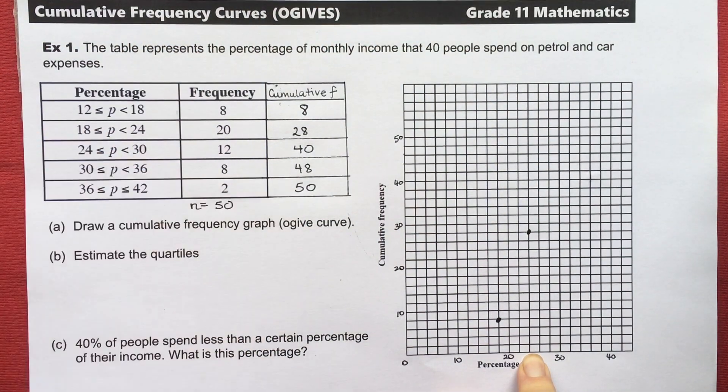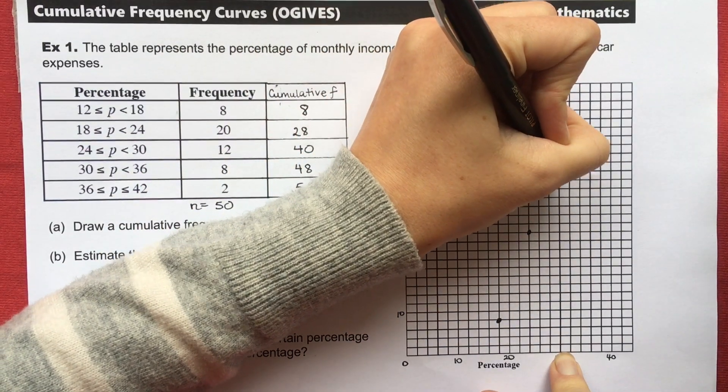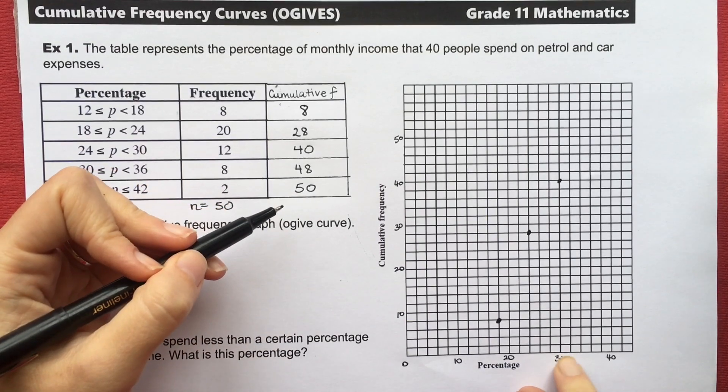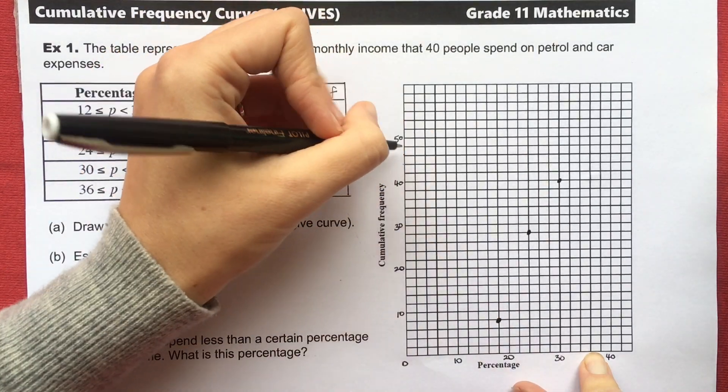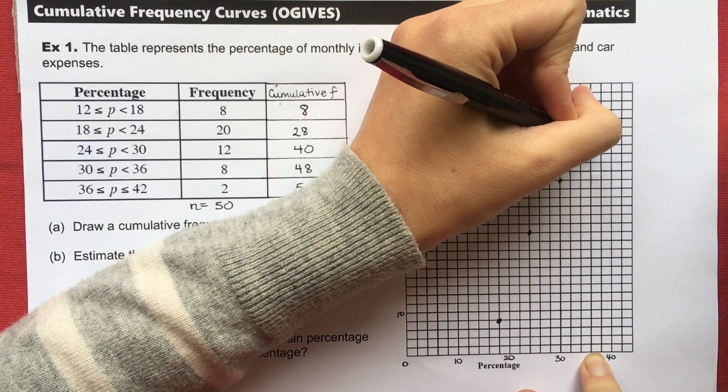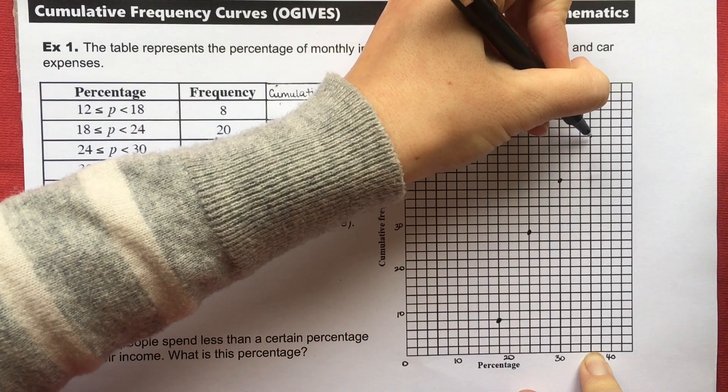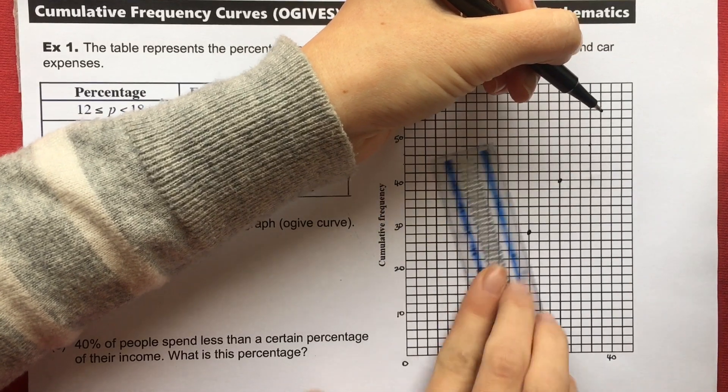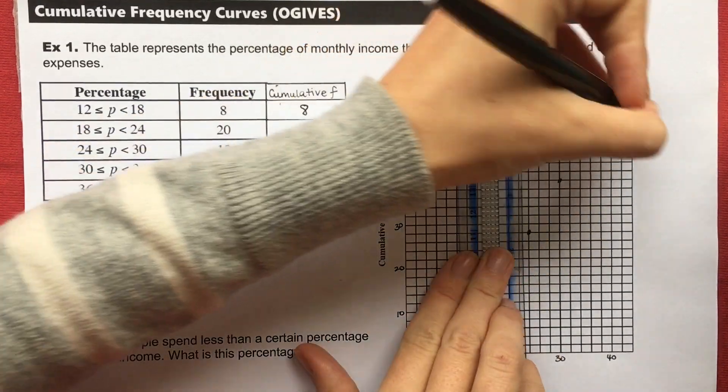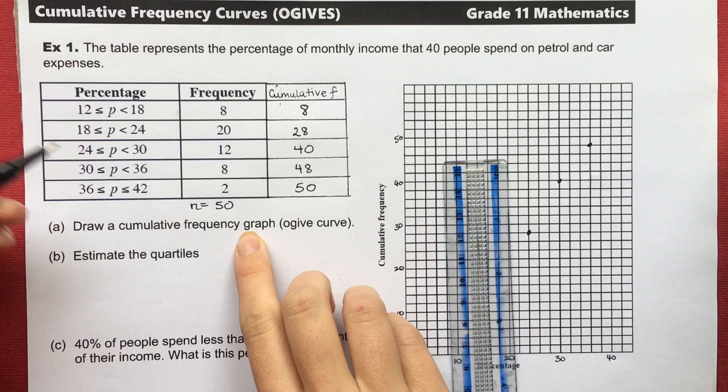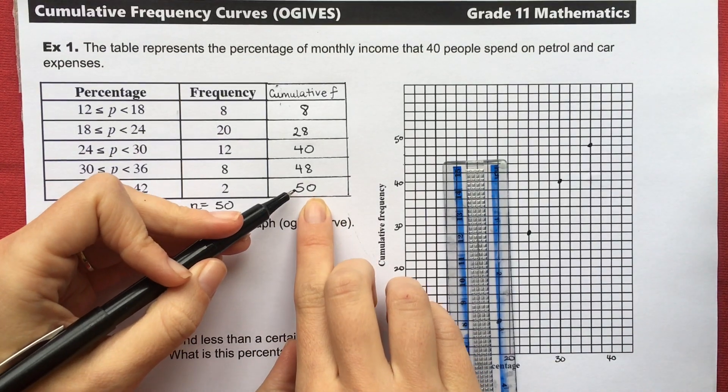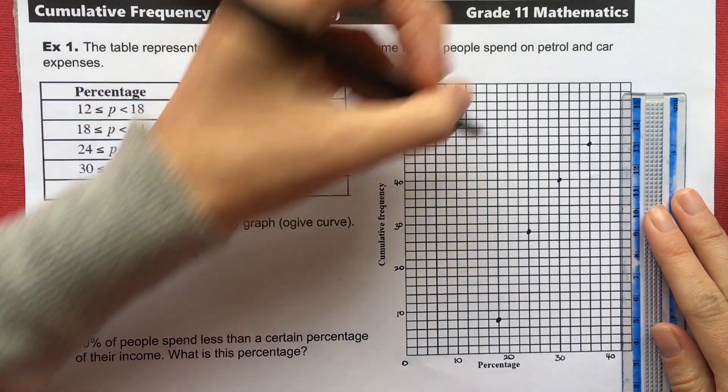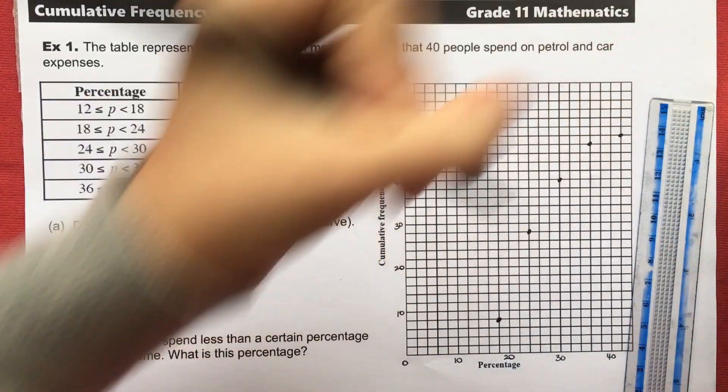30 and 40. 36, 48. And then my last one is at 42 and my cumulative frequency is 50. So 42, use my ruler, and 50.